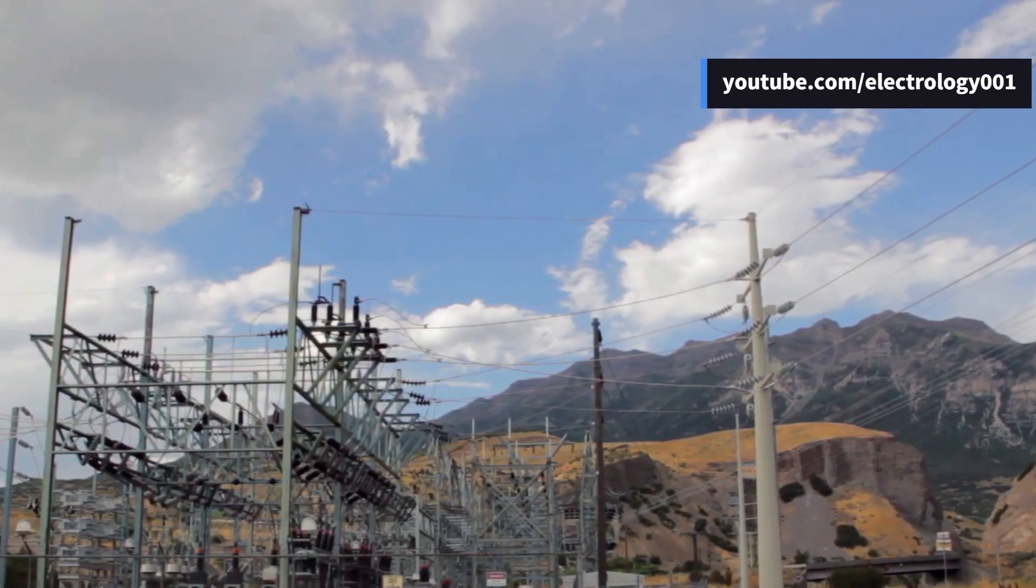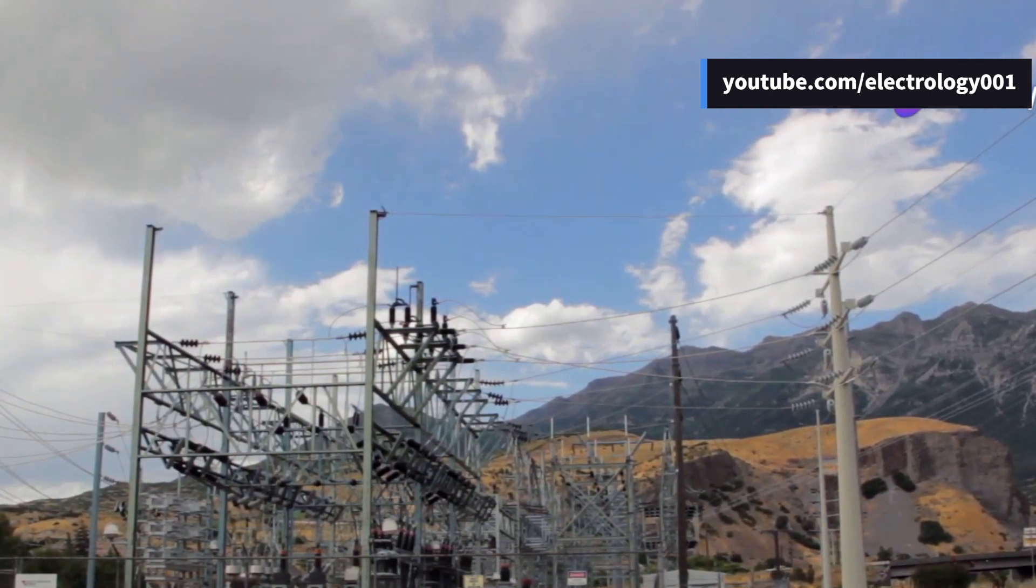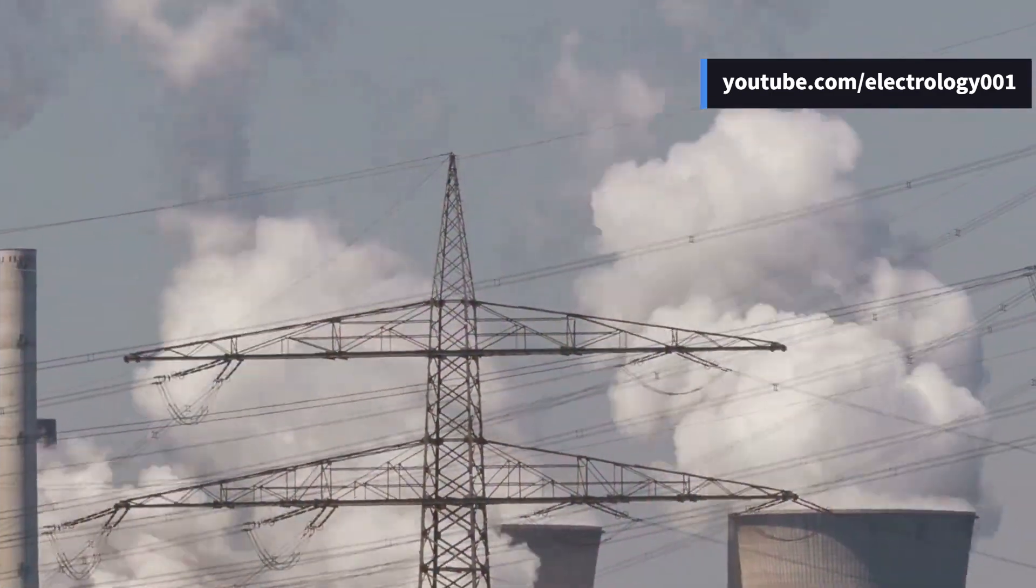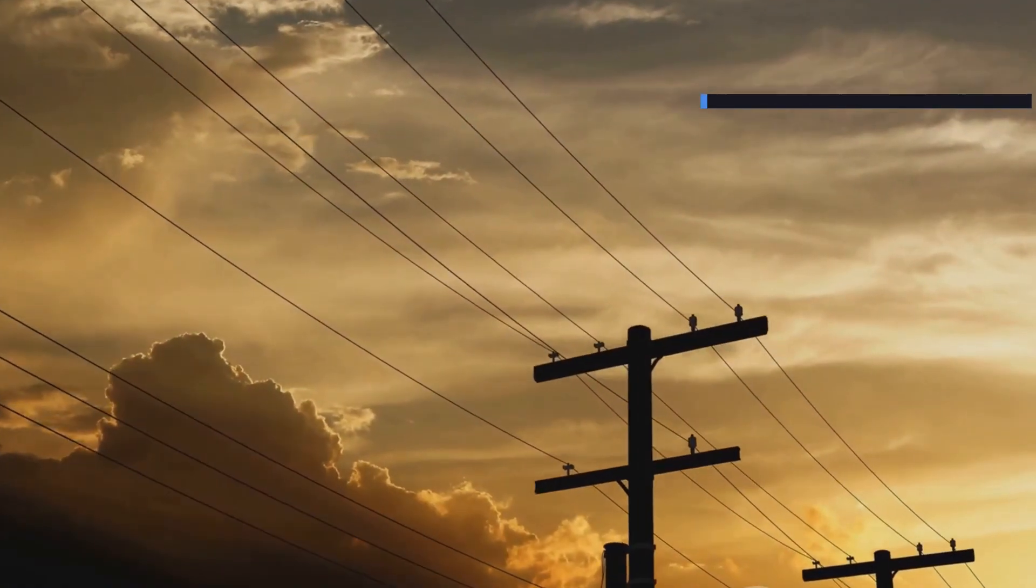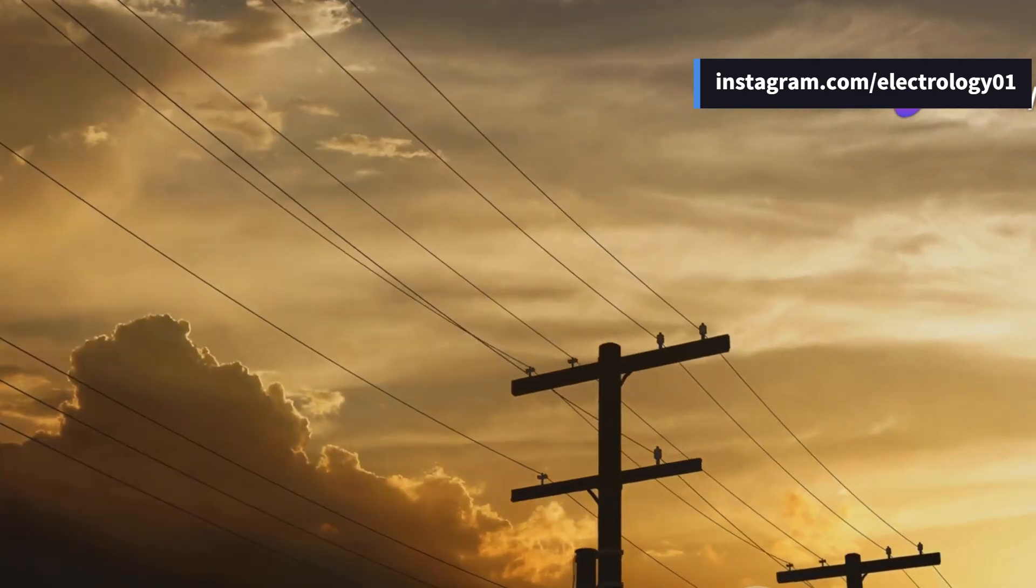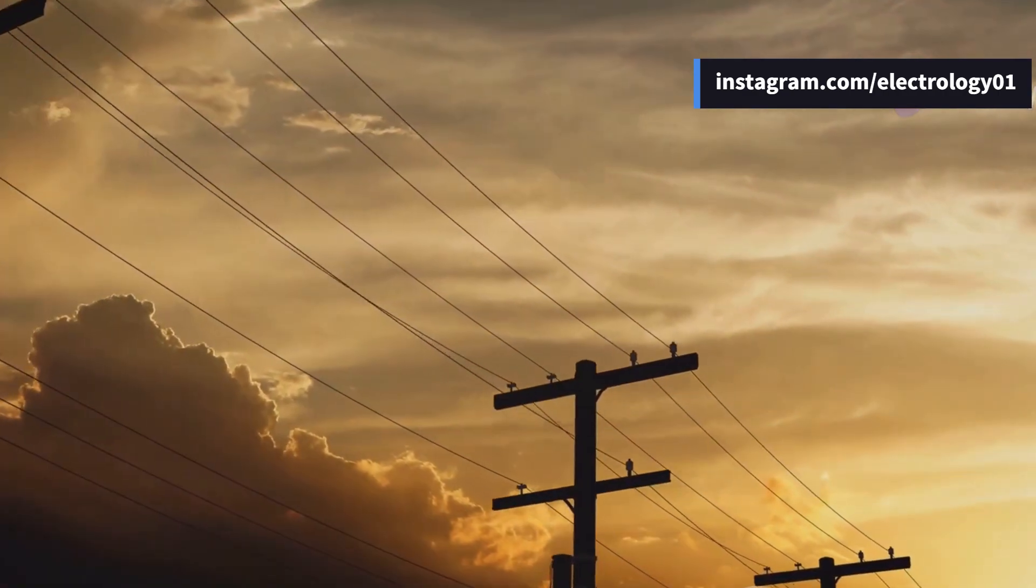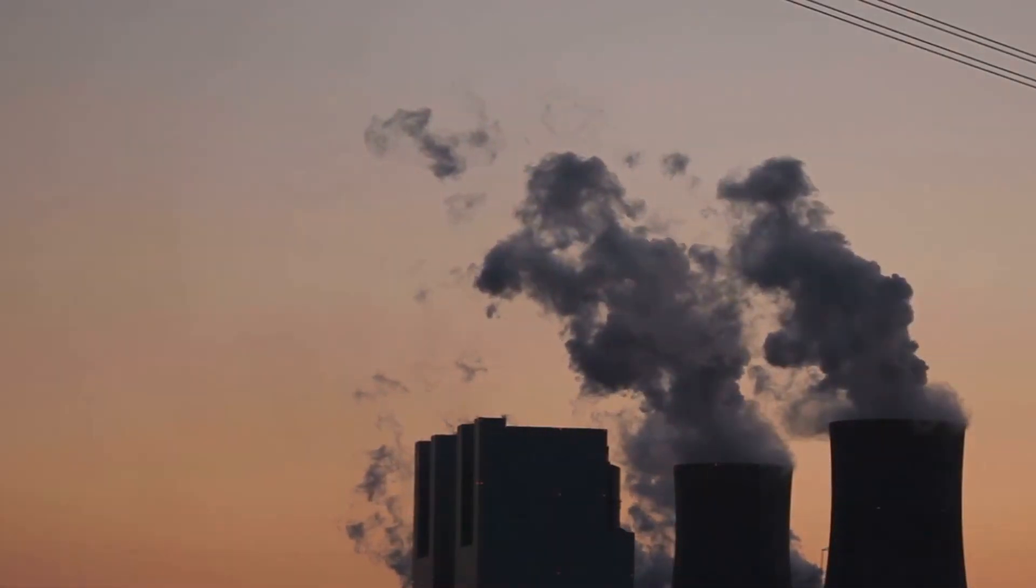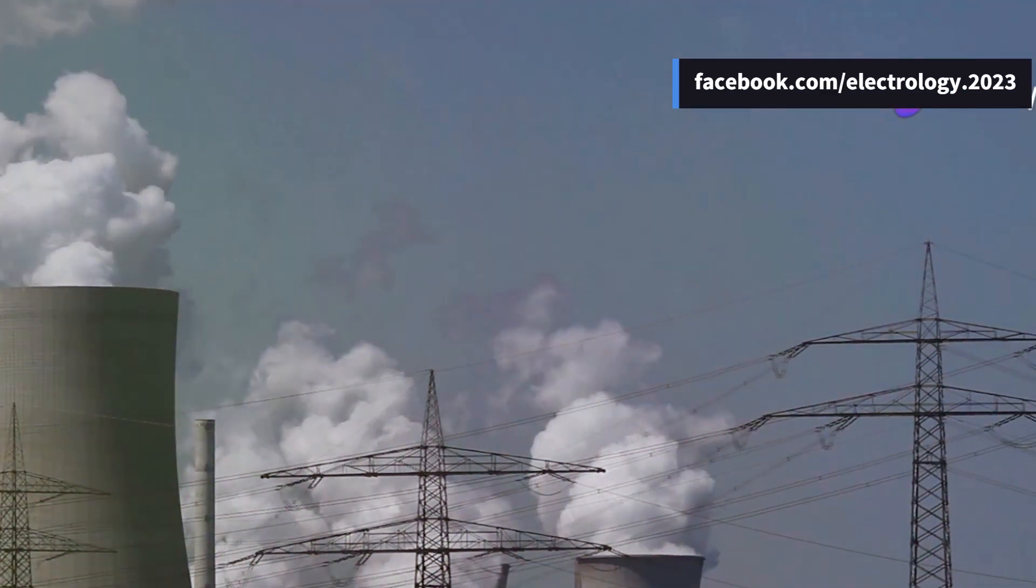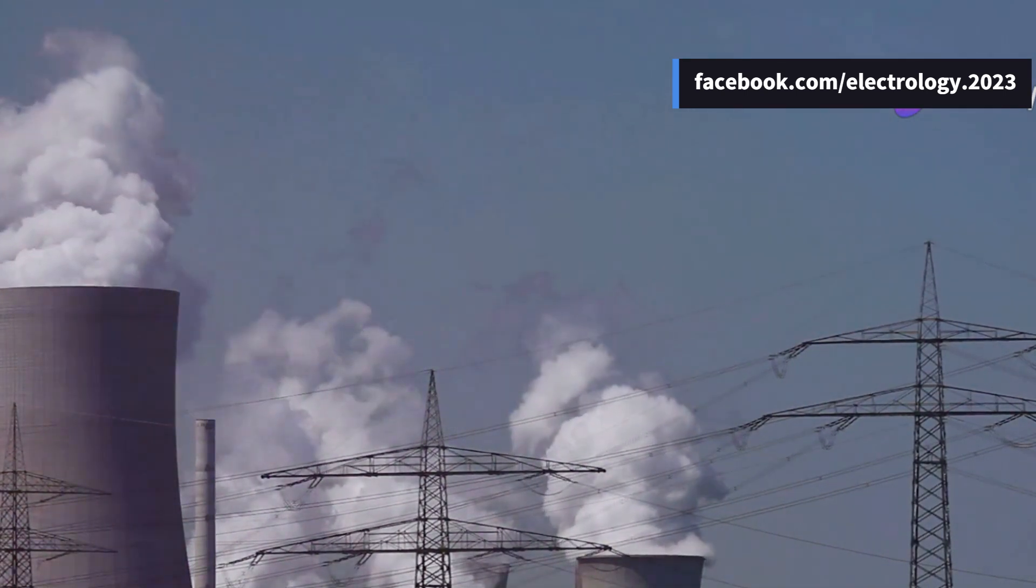In conclusion, the 3-zone protection scheme is not just about reacting to faults. It's about doing so with precision, speed, and intelligence, ensuring our electrical systems are robust, yet responsive. This innovative approach leverages advanced technology to differentiate between transient faults and permanent damage, minimizing downtime and preventing catastrophic failures. By integrating real-time monitoring and automated controls, the scheme optimally protects the grid, ensuring continuous and reliable power supply. It's a testament to how advanced engineering helps safeguard our modern world.